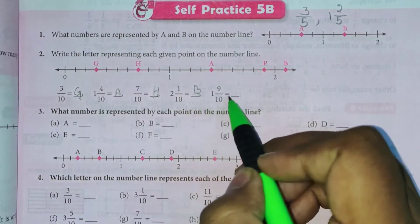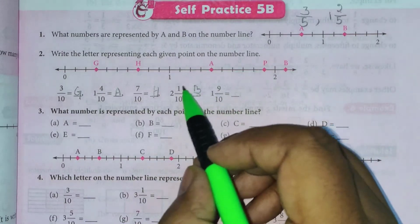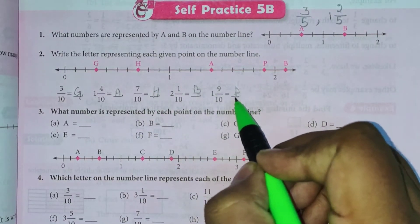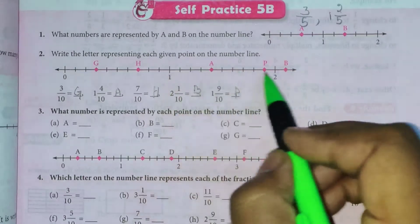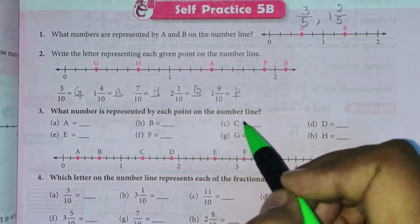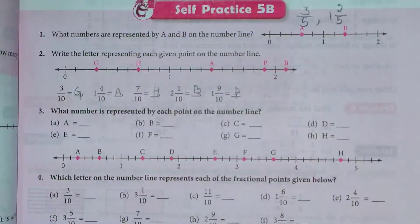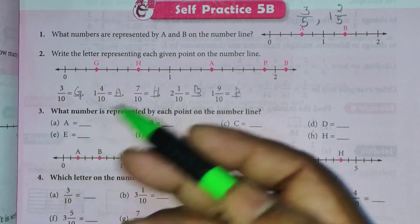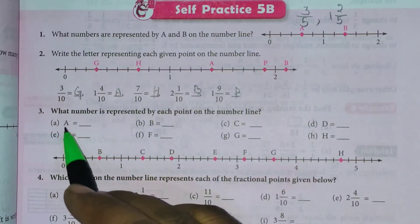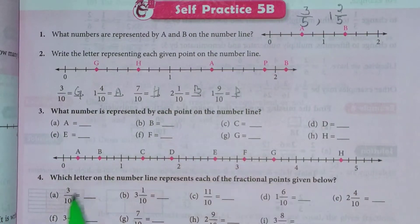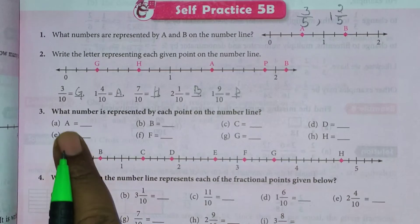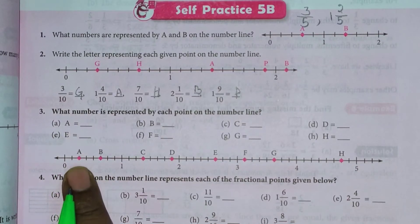And last wala ho jayega one, 9 by 10 — one 9 by 10 is P. 1 ke baad 9 by 10 toh hamaara hai P. Clear hai? Aisai hi jo question second dekha vaisa hi question third mein hume represent karna hai. Represent karna hai jaise ki number line par aap dekh rahe hain — toh A kahaan par represent hai?